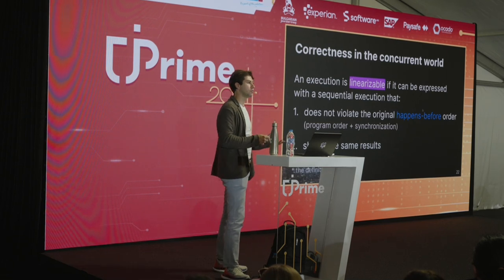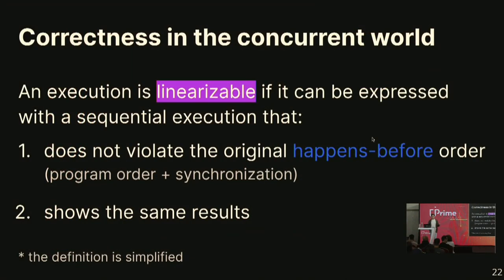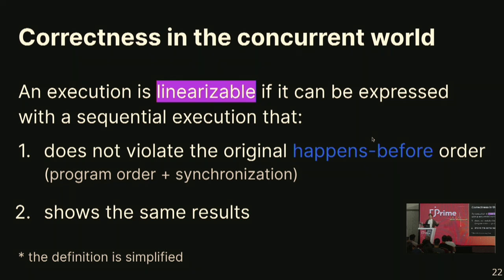We say that a concurrent execution is linearizable if we can find a sequential execution that produces the same results, consists of the same operations, and doesn't violate the happens-before order — the program order in each of the threads and synchronization between threads. If all possible scenarios produce linearizable results, then we say the data structure is linearizable.